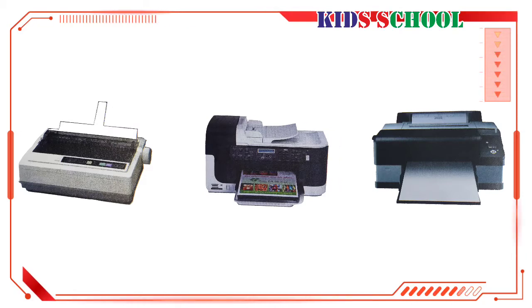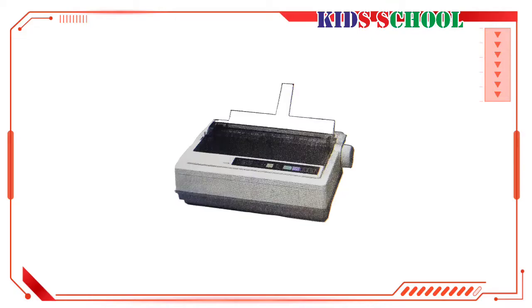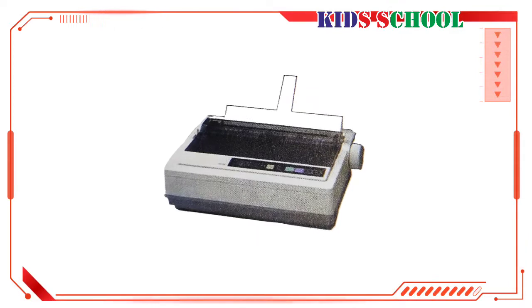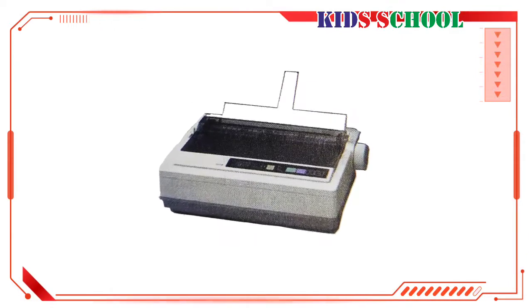This information or output can be printed on paper with the help of a printer. The printer is connected to the CPU box with a cable. A printer can print both text and pictures. The printed copy of the text or picture is called a hard copy, while the copy stored by the computer or displayed on the screen is called a soft copy. There are three kinds of printers: dot matrix printer, inkjet printer, and laser printer.